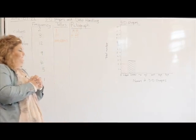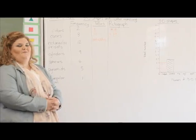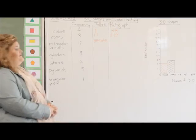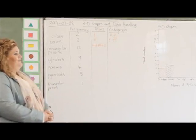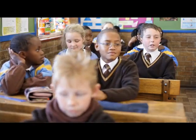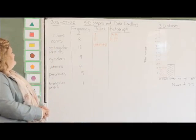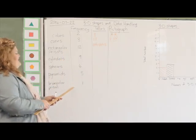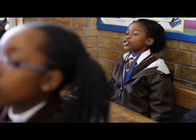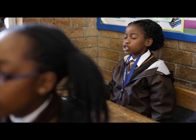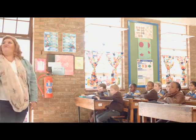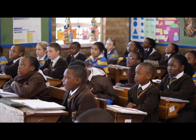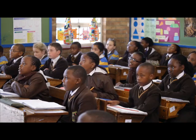If I ask you which shape was the most popular — rectangular prisms, because it has the highest amount. Which shape was the least popular? The triangular prism, with only one. What is the difference between the most popular and the least popular shape? You take 12 and minus it by 1, and it gives you 11. You are a superstar! Can you see how from collecting data I can ask you different questions? And if you remember the song, it will be easy peasy, lemon squeezy.